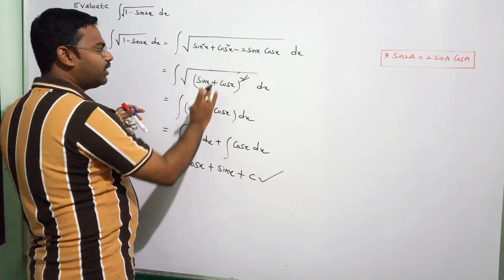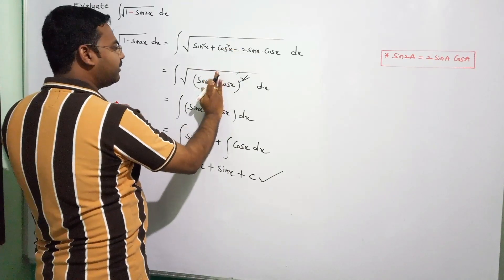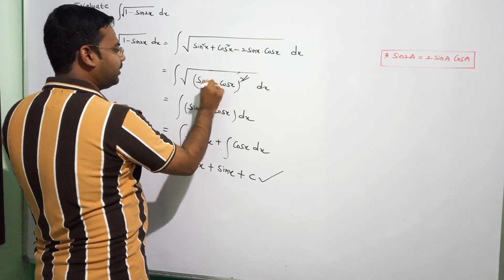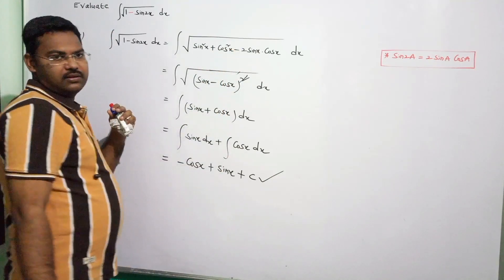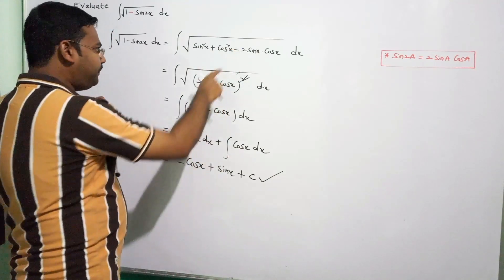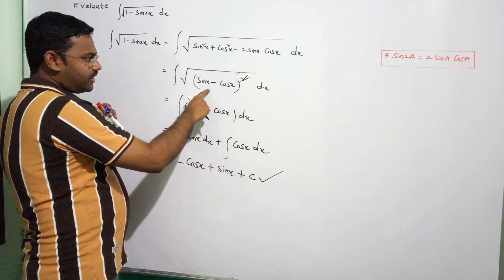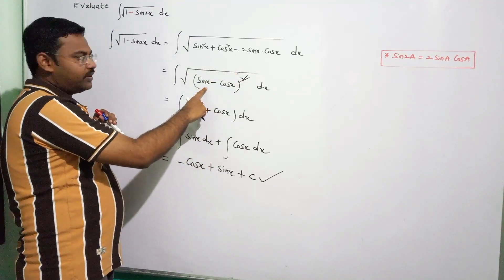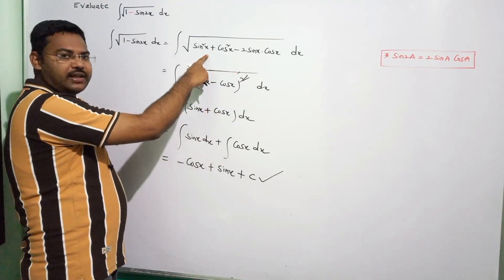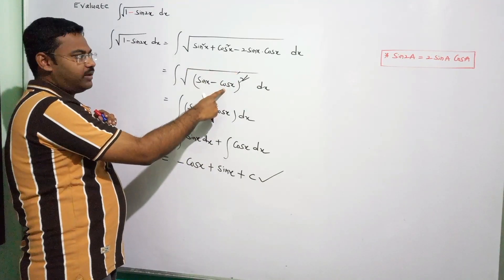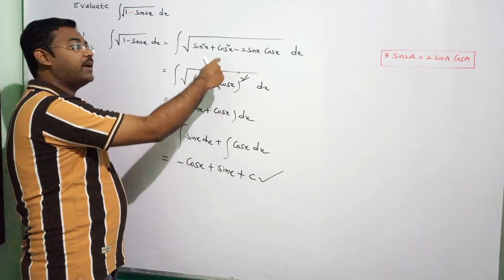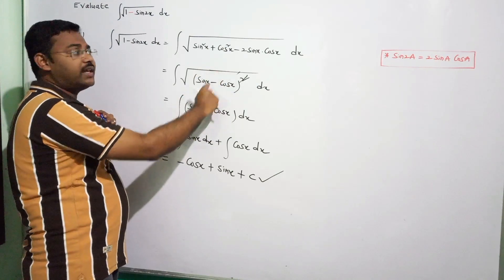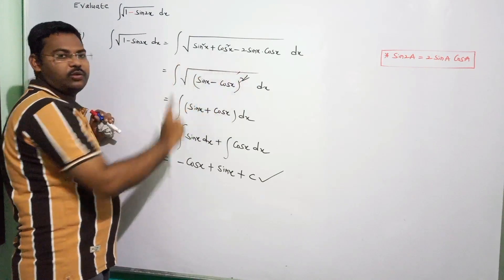The middle term is minus, so it matches the (a − b)² pattern. This becomes (sinx − cosx)² — a² = sin²x, b² = cos²x, and 2ab = 2sinx·cosx with a minus sign.